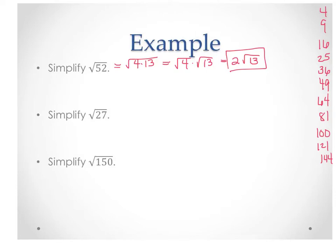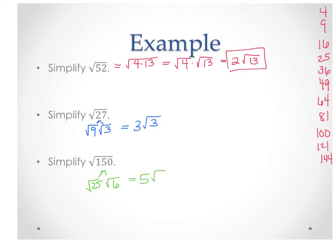Let's do a few more. Square root of 27 — which perfect square goes into 27? It's 9 times 3. So that gives us square root of 9 times square root of 3, which is 3 square root of 3. Square root of 150 — 25 goes in, since 25 times 6 is 150. Square root of 25 is 5, so we get 5 square root of 6. We take the square root of the perfect square factor and keep the other factor under the radical.